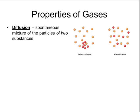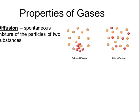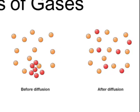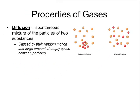Gases regularly undergo diffusion, which is a spontaneous process in which particles of two different substances mix together. When diffusion occurs, the particles always move from an area of high concentration to an area of low concentration. You can see that before diffusion, the red particles are clustered together at the bottom of the picture, and then after diffusion the red particles have spread apart from each other. This diffusion is caused by the random motion of the particles and the large amount of empty space between the particles, allowing the two gas particles to mix together.